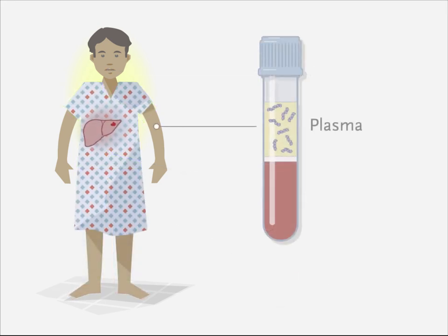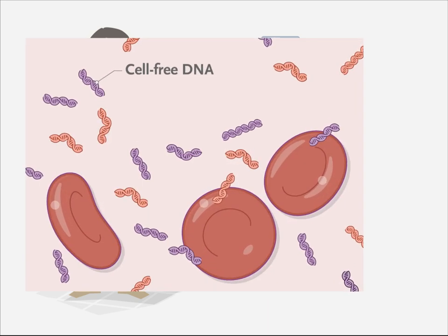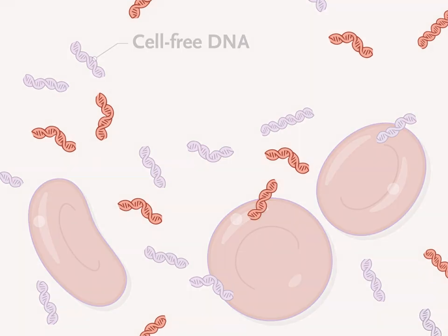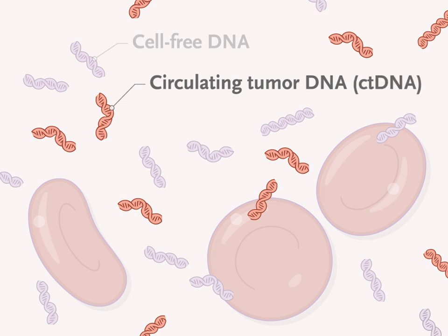Patients with cancer tend to have higher levels of circulating cell-free DNA, owing to the release of DNA from tumor cells into the bloodstream. Cell-free DNA released from tumor cells is referred to as Circulating Tumor DNA, or ctDNA.